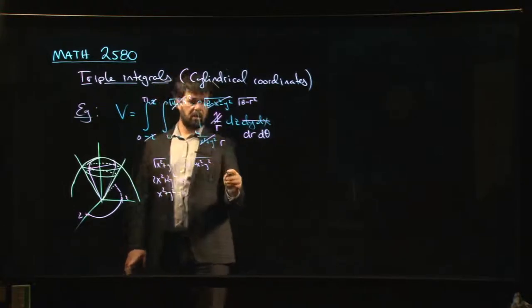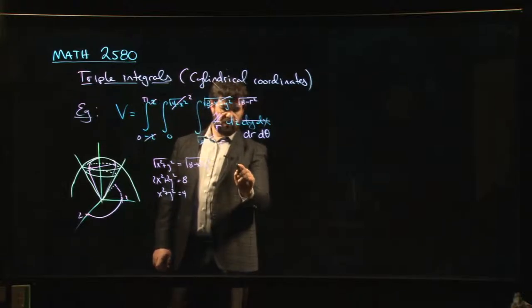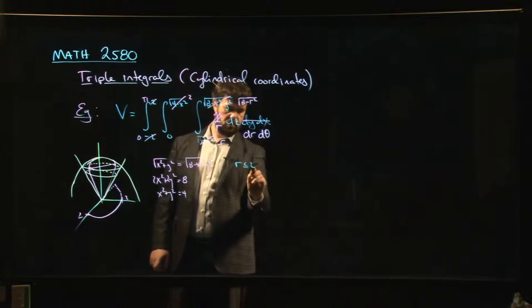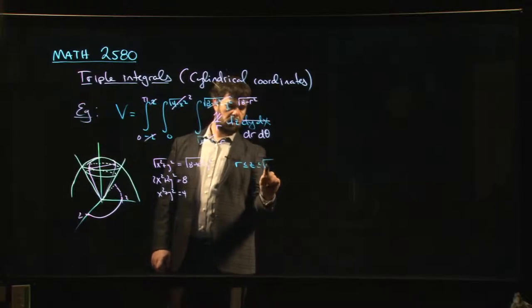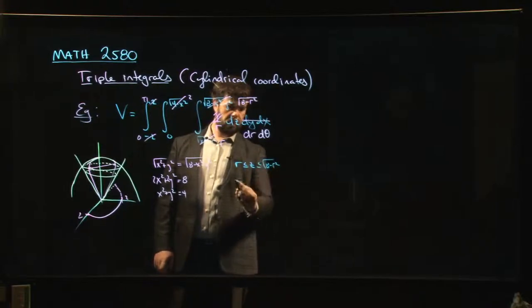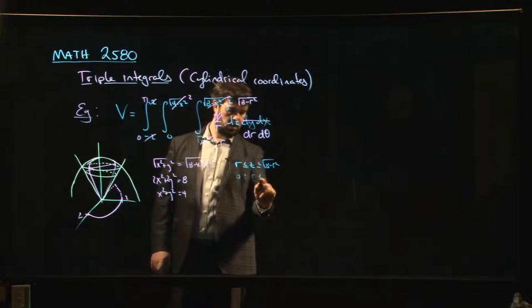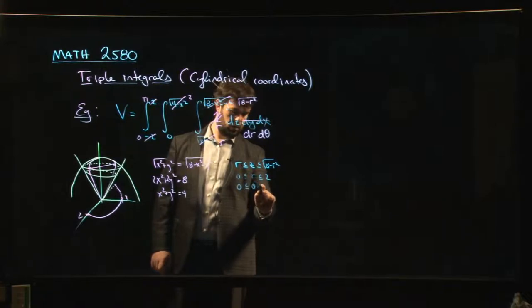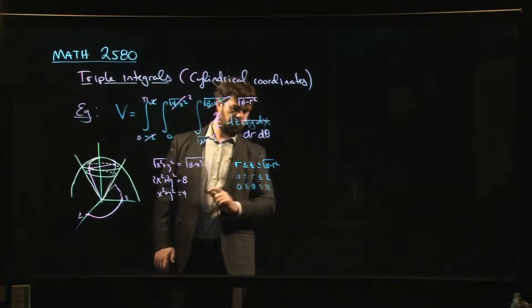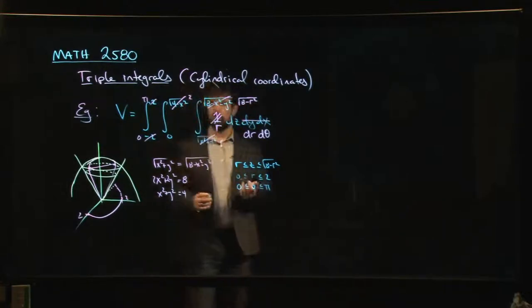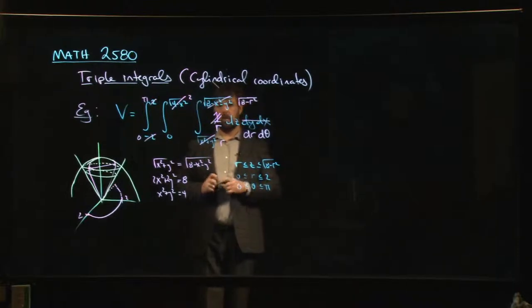We did it in terms of rectangular coordinates, but really what we have here is we're saying that z is between r and the square root of 8 minus r squared, where r ran from 0 to 2 and theta ran from 0 to pi. And that let us set up this integral.